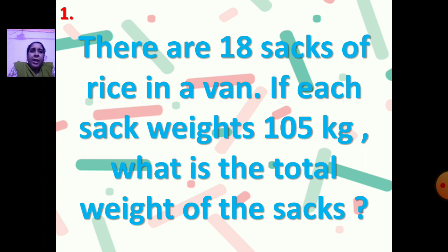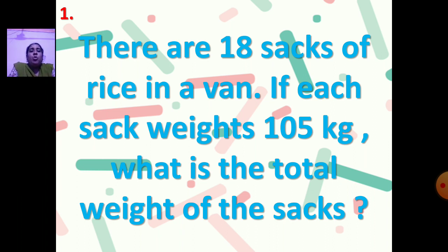First question: There are 18 sacks of rice in a van. If each sack weighs 105 kg, what is the total weight of the sacks? What is given in this question? There are 18 sacks of rice in a van — that is the number of sacks. The weight of each sack is 105 kg. You have to find the total weight of 18 sacks. Write the statement, do the working, then write the answer.